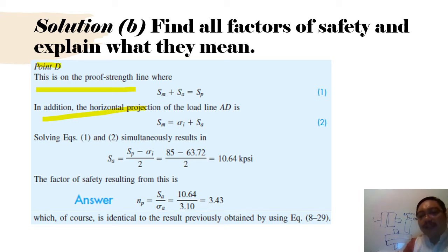The factor of safety is found by dividing the distance AC by AB. Point C is the modified Goodman, from Table 8-17 you get this value. Trace back to understand where you get the value. If you have to refer to the graph, refer to the graph. If you have to refer to the table, refer to the table. This is how you learn to get the value. Point D, point E, point F, and everything, all referring to the graph in the previous slides. Point F is the proof strength line where SM plus SA equals SP. The factor of safety around this is 3.43, which is identical to the previous one obtained by equation 8-29.